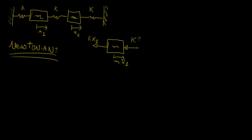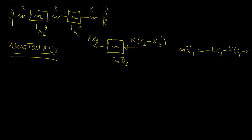One way to handle this is to take the difference between the two displacements as the change in length of the spring, so we make sure we account for the effect of one mass on the other. So we write the sum of forces in the X direction: the inertia force equals minus KX1 minus K(X1 minus X2), which rearranges to minus 2KX1 plus KX2. That is the first equation of motion.